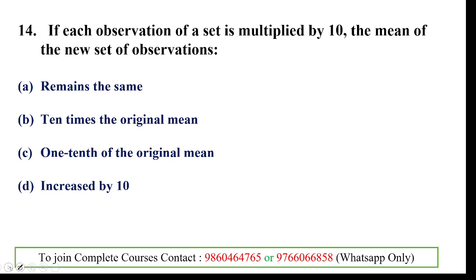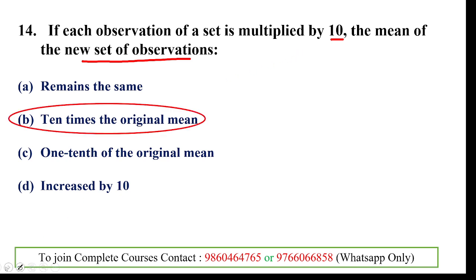Next question: if each observation of a set is multiplied by 10, the mean of the new set of observations — since every data point is multiplied by 10, the mean also becomes 10 times the original mean.